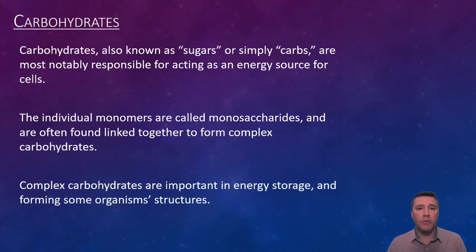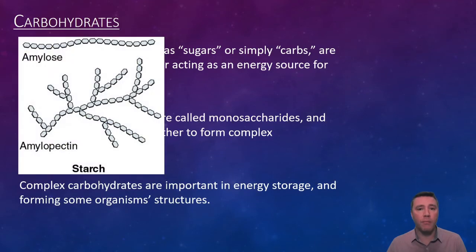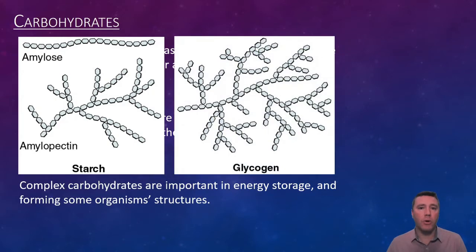Plants store carbohydrates in chain-like structures and branched structures, collectively referred to as starch. Animals store carbohydrates in the form of glycogen, a highly branched, complex carbohydrate.